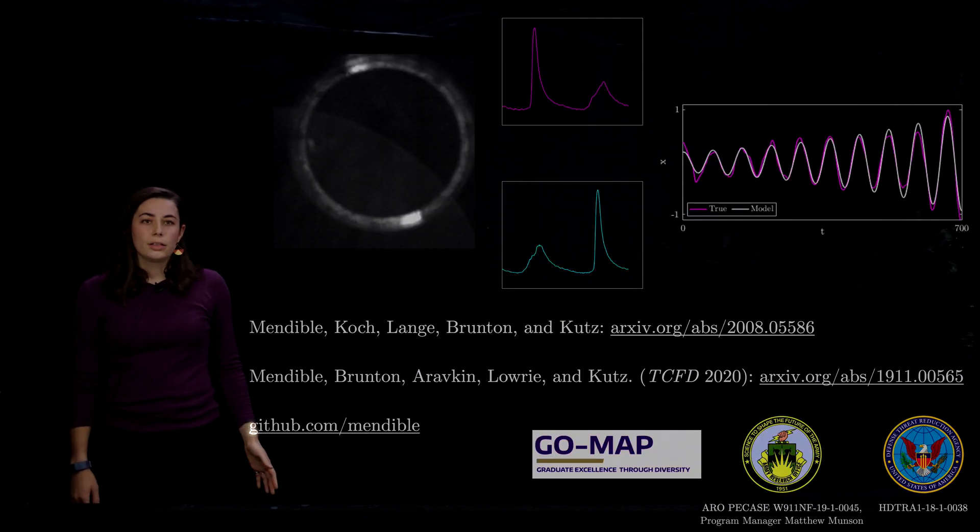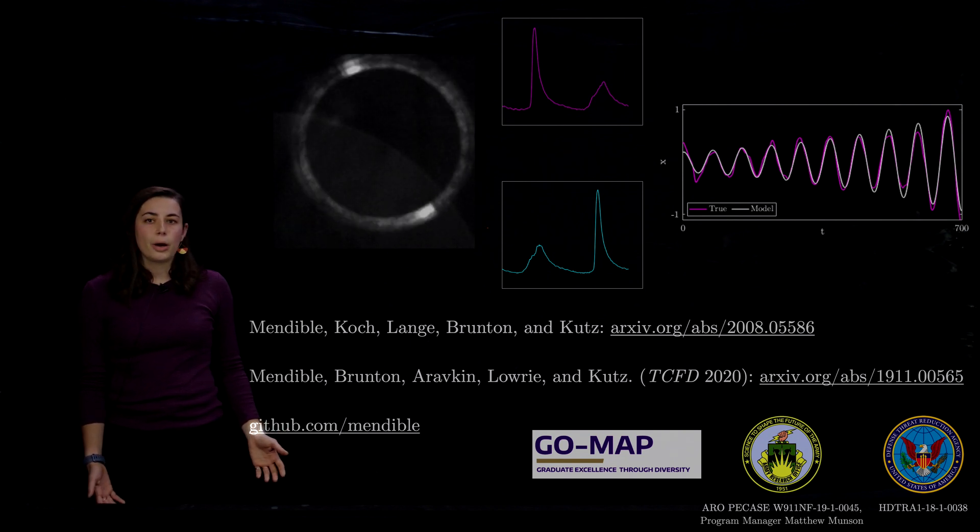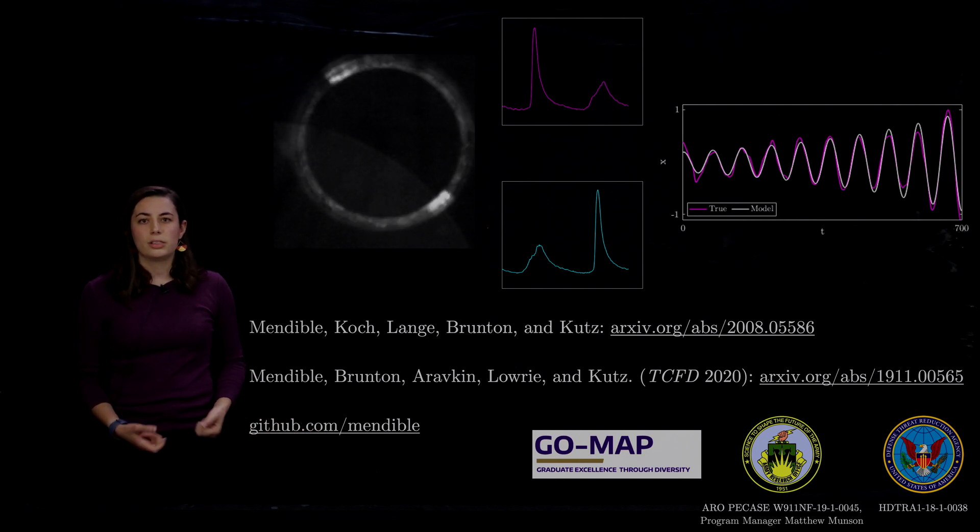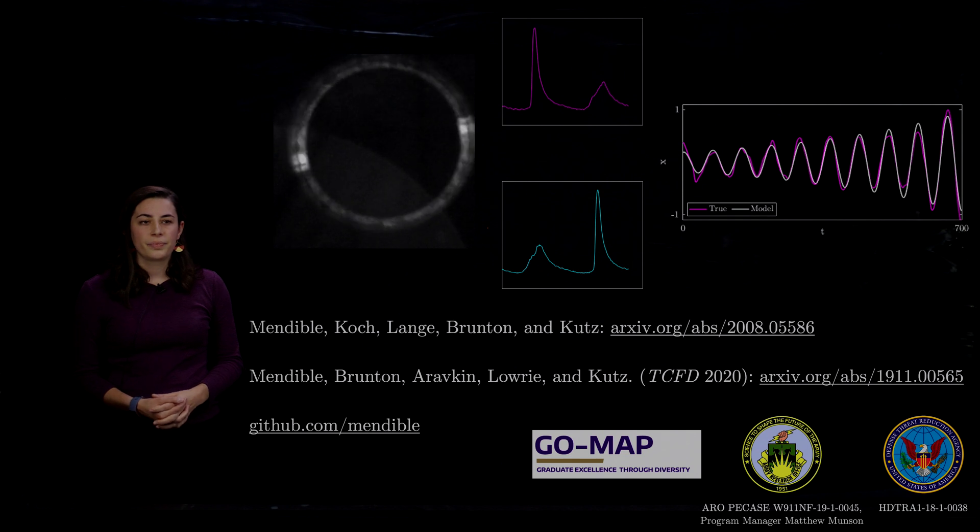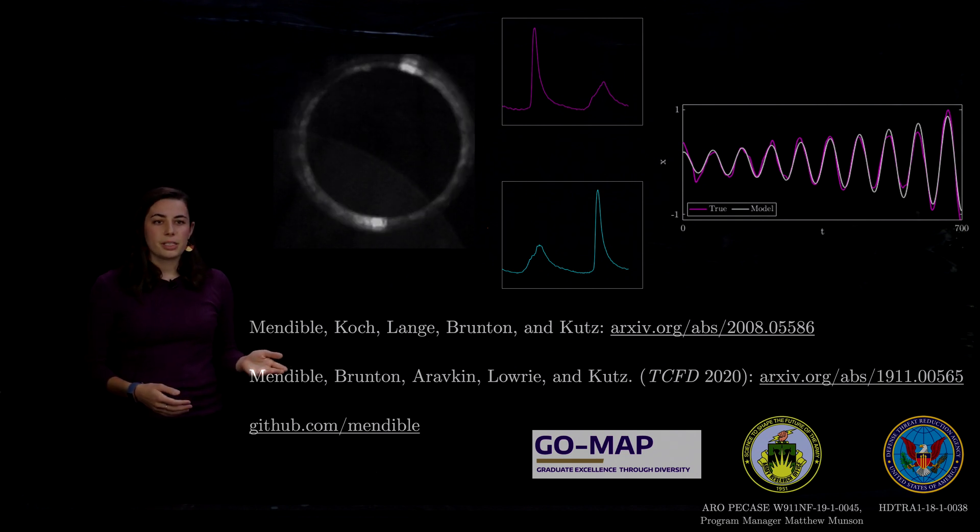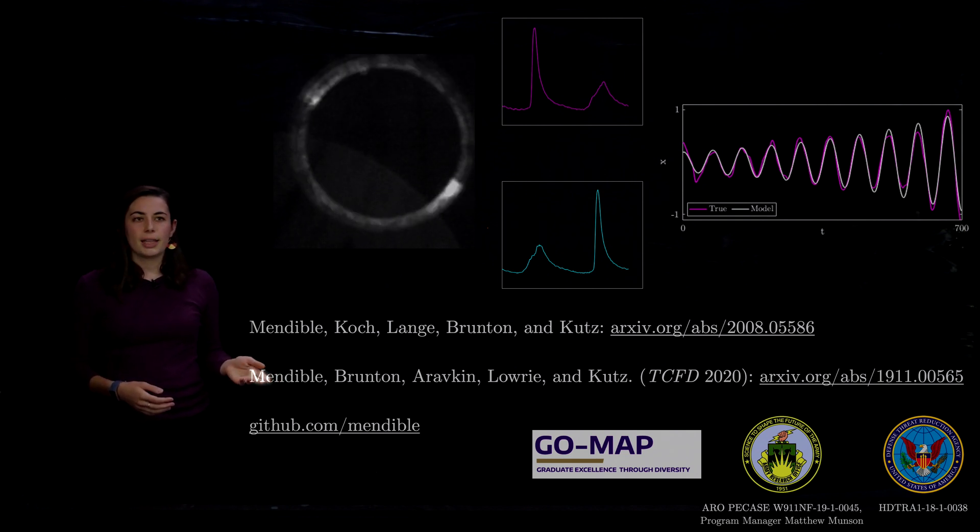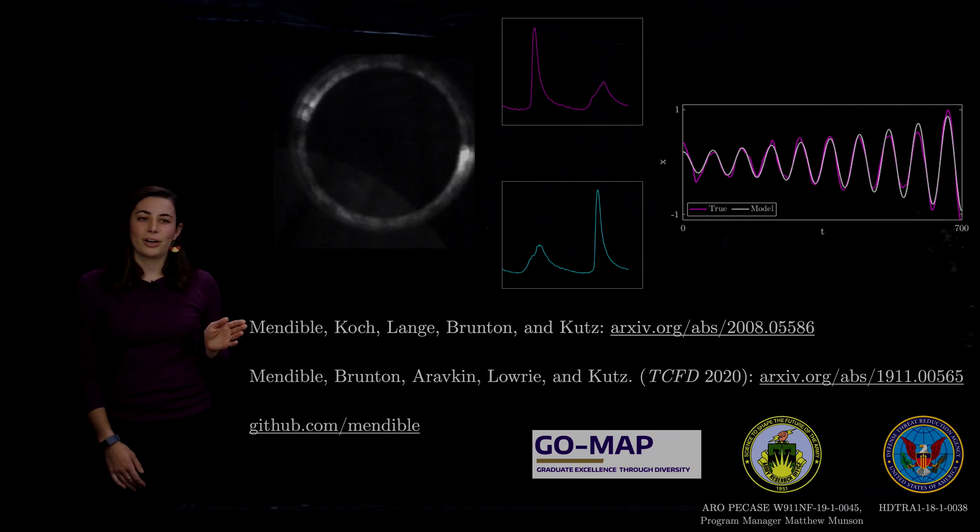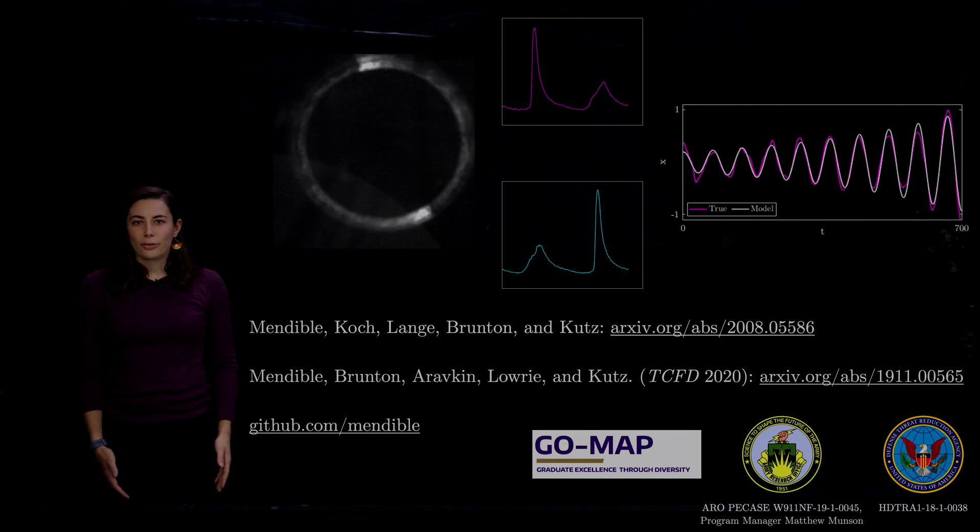So overall, I've showed you the method that I developed to decompose traveling wave data using only data. And we can get out interpretable speed models to tell the interactions between these waves. The method that I developed is available in this paper. And then the work that we've done on the rotating detonation engine data is available in this paper on Archive. You can also find code for all this on GitHub. And thank you for watching.